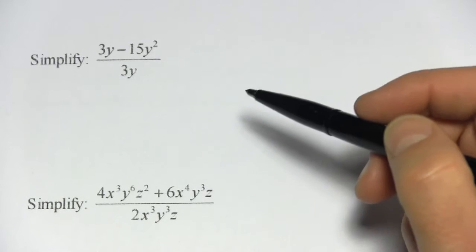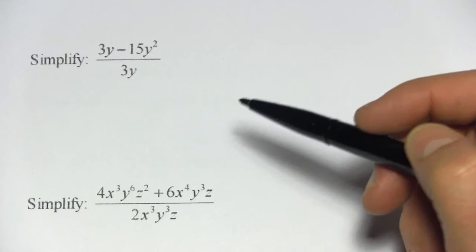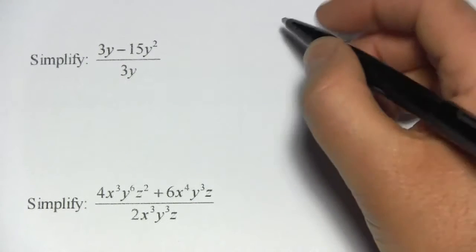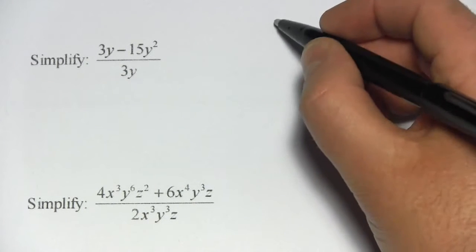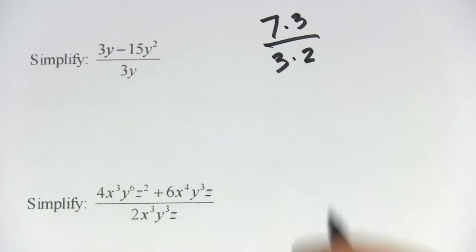In these problems, we're trying to simplify algebraic expressions by canceling. Canceling is that thing where if you have something on the top and something on the bottom, let's say you had 7 times 3 on the top and you had 3 times 2 on the bottom.